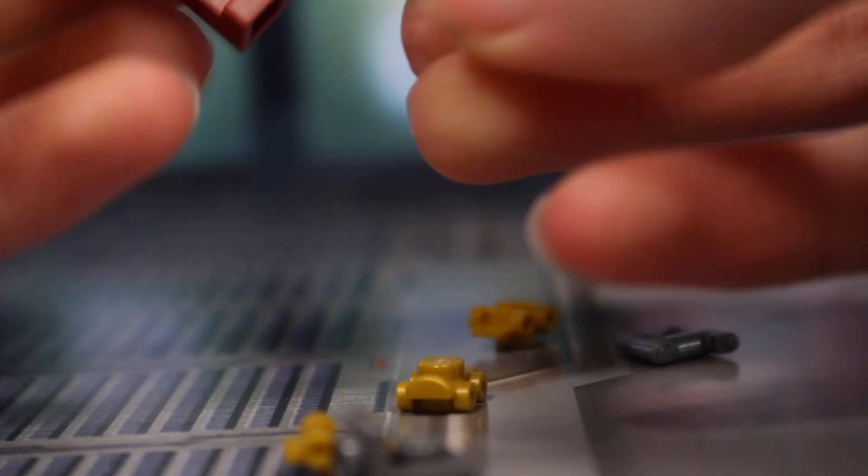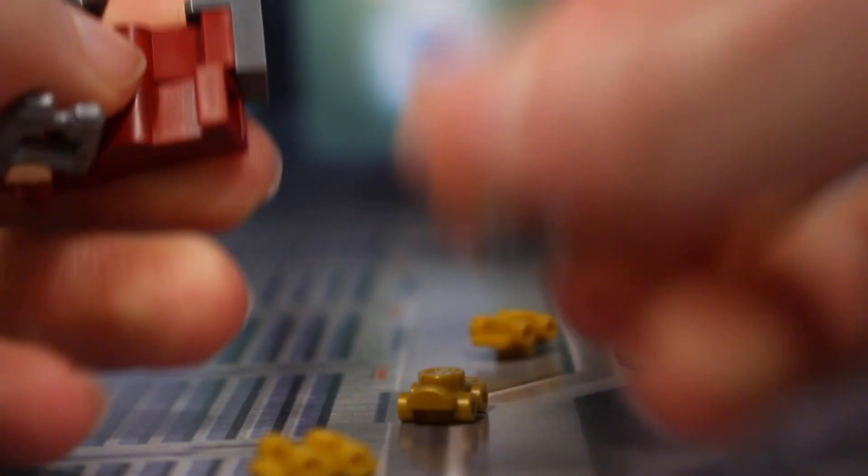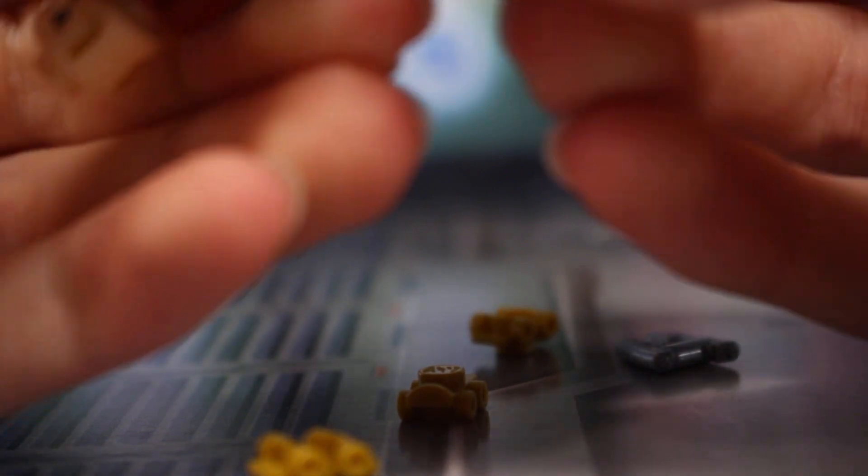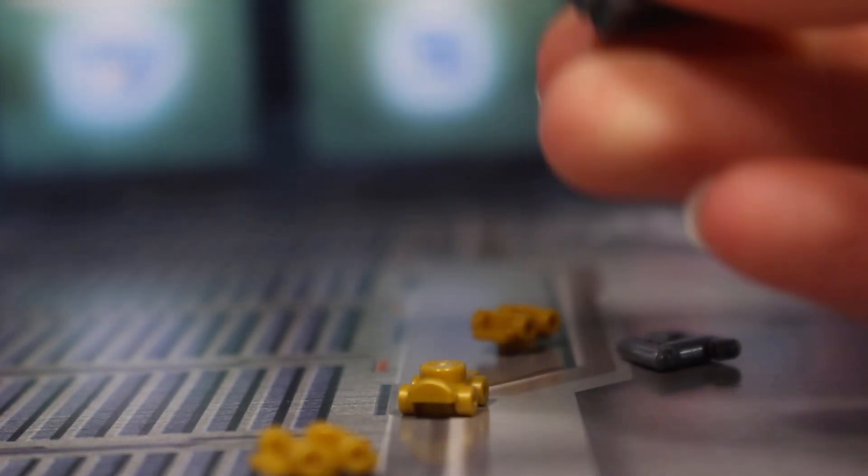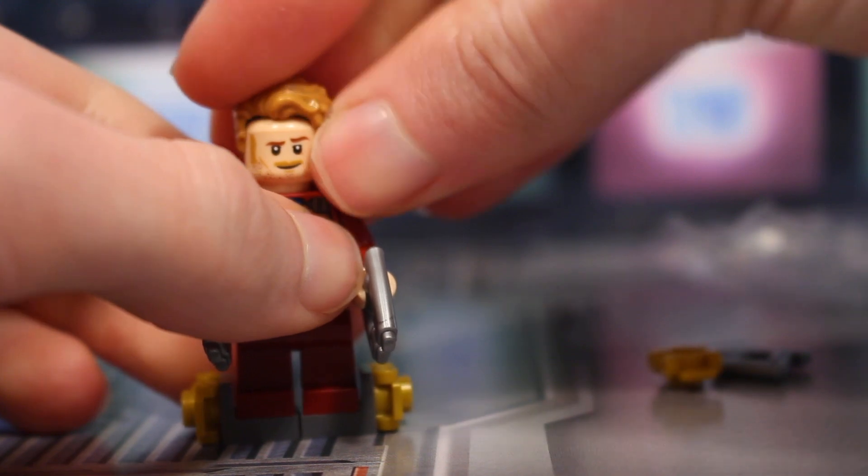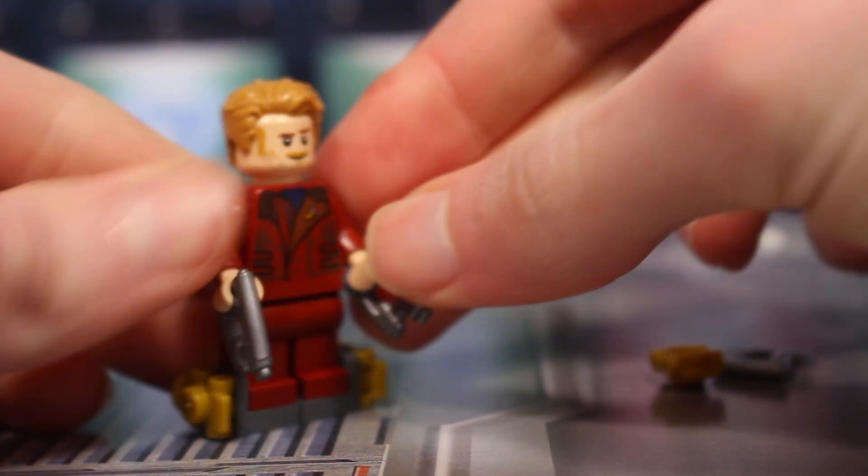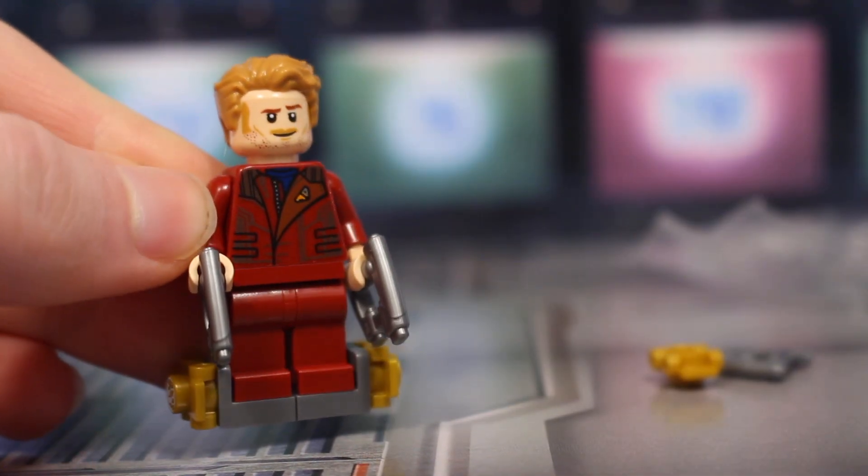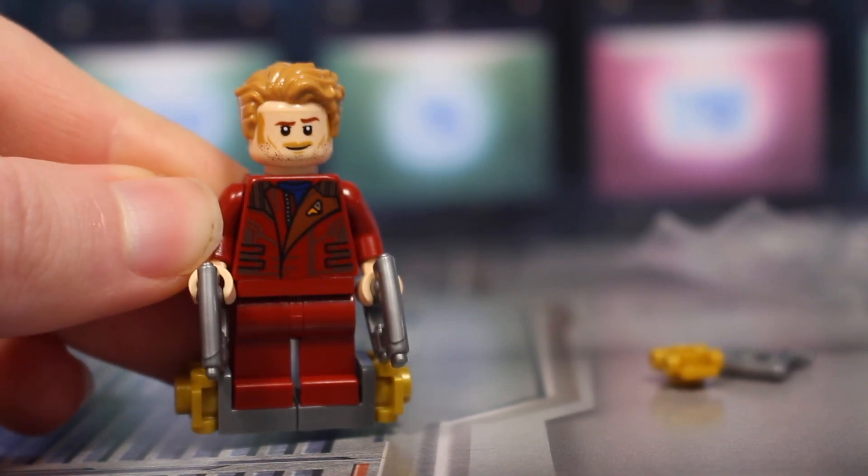And then he just comes with these little rocket boots on his feet here. I'll have to check how these are meant to be built and then we can finish him off by putting on his hairpiece there. So that is day one of the Guardians of the Galaxy advent calendar, it is Star-Lord.